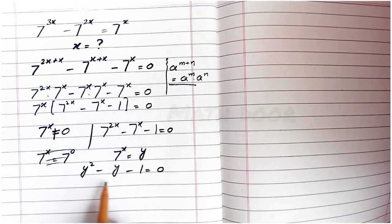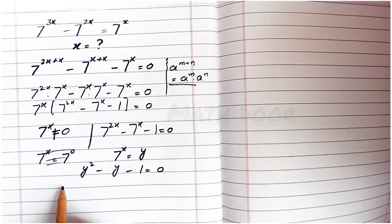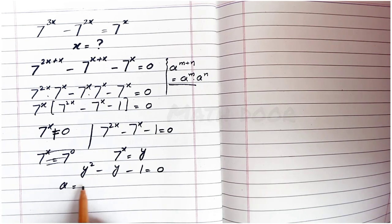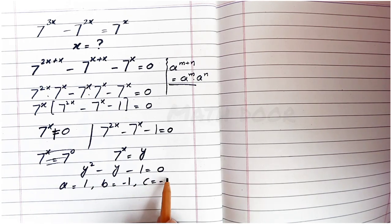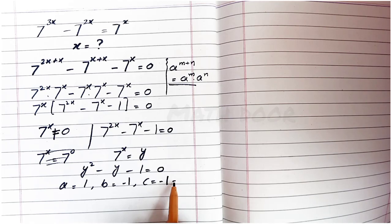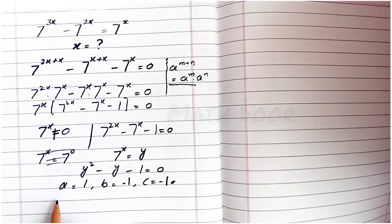From here we apply the quadratic formula. For this equation, the value of a is 1, the value of b is minus 1, and the value of c is minus 1.